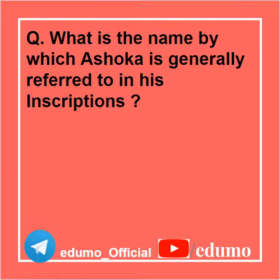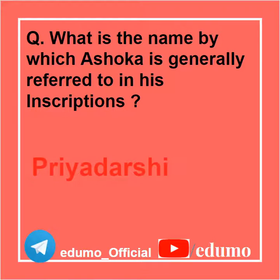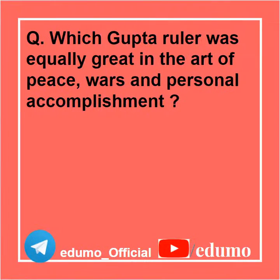What is the name by which Ashoka is generally referred to in his inscriptions? Priyadarshi. Which Gupta ruler was equally great in the art of peace, worth, and personal accomplishment? Chandragupta II Vikramaditya.